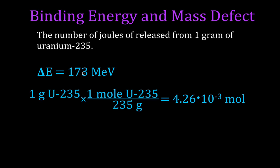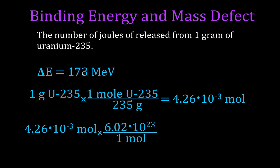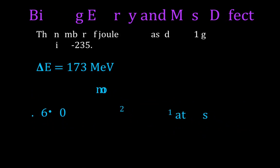To find how many atoms or nuclei that is, we multiply the moles by Avogadro's number — 6.02×10²³ particles per mole — giving us 2.56×10²¹ nuclei of uranium-235. We know we get 173 MeV from each one.